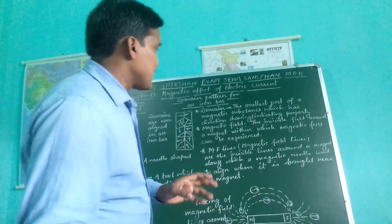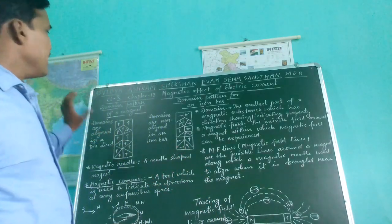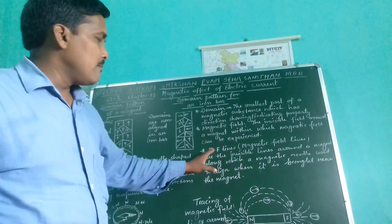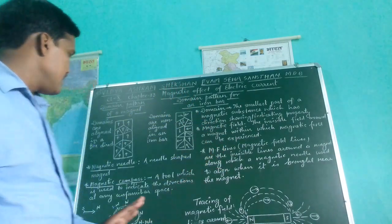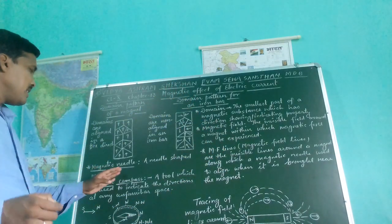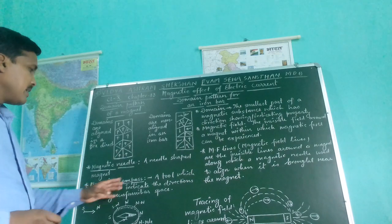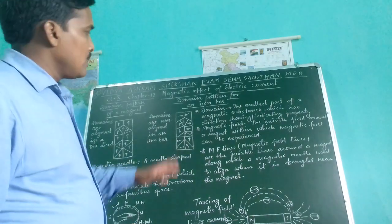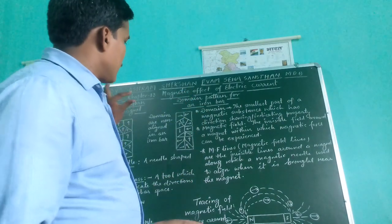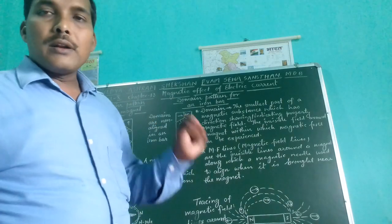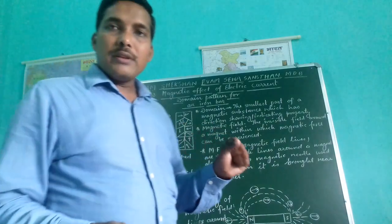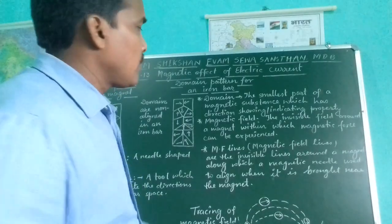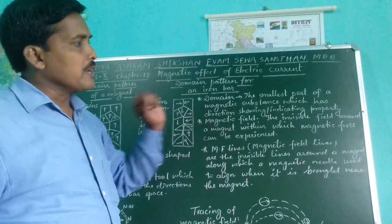So the keywords are: domain, magnetic field, magnetic field lines, magnetic needle, magnetic compass. These keywords should be learnt before going through the topics. The very first keyword is domain.